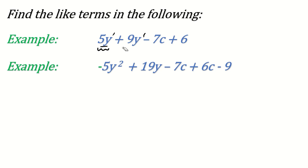In the expression −5y² + 19y − 19, the variable y appears in two terms: −5y² and 19y. The variable is the same (y) but the powers are different — 2 and 1 — so these are unlike terms, not like terms.